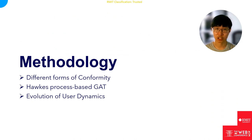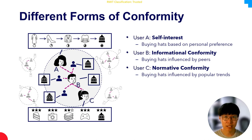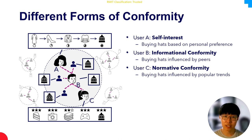Now let's move to our methodology. On this slide, we see three distinct types of users, each driven by unique factors when buying hats. User A is driven by self-interest, making purchases solely based on personal preference. User B is driven by informational conformity, guided by the opinions and recommendations of friends. User C tends to follow mainstream fashion trends, influenced by popular trends when buying hats. Our research identifies these three different motivations and models them respectively.